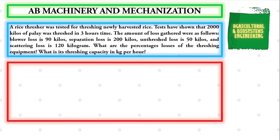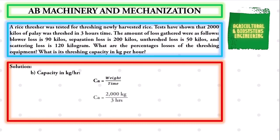Finally, let us solve for capacity in kilograms per hour. Using the formula: capacity = weight / time. Substituting: capacity = 2000 kilograms / 3 hours. Dividing gives us a final answer of 666.6667 kilograms per hour.